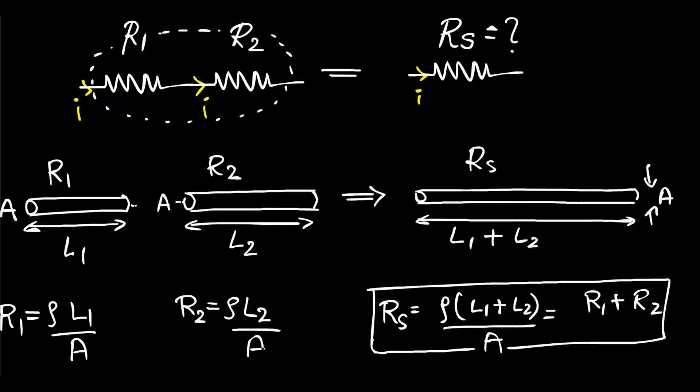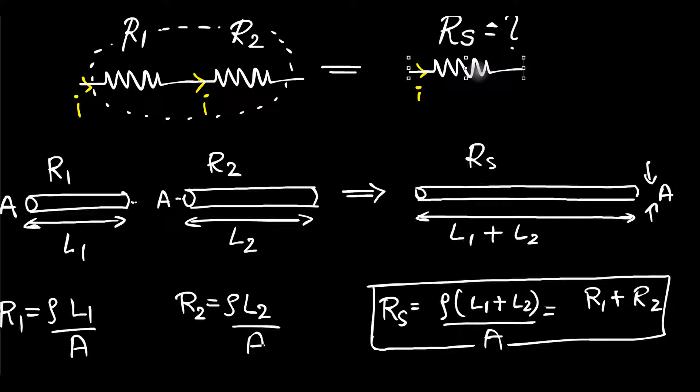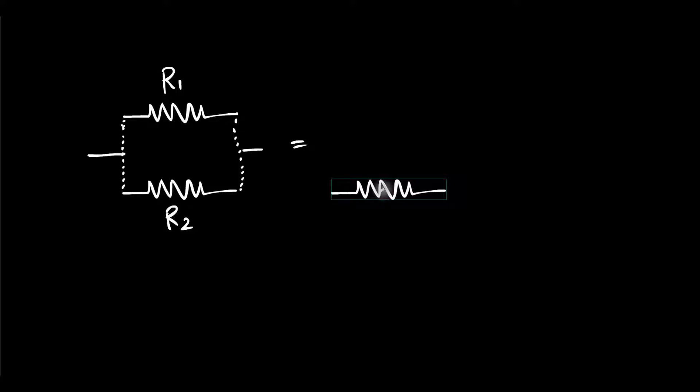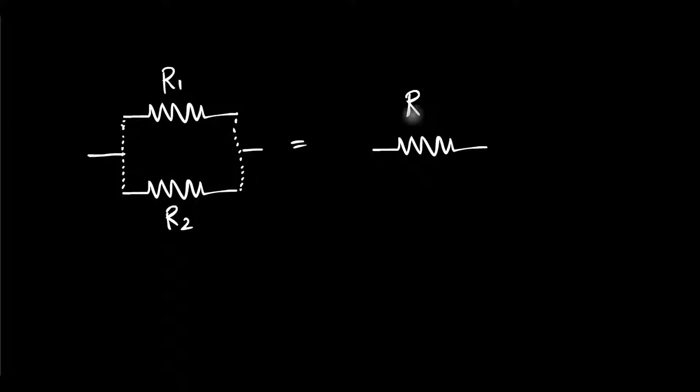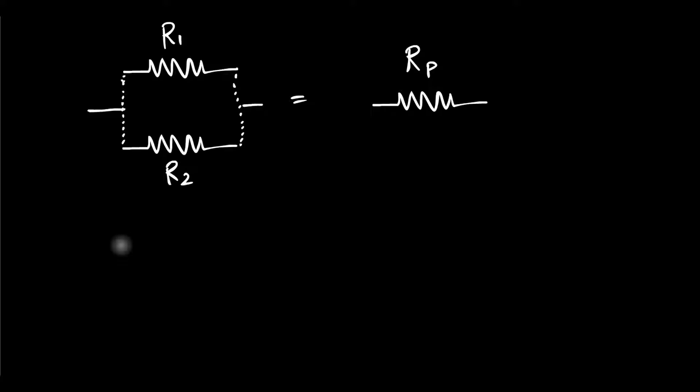Now let's see what happens when we put them in parallel. What if I take these two resistors — R1 and R2 — and connect them in parallel like this? The question now is: what is that one single resistance RP that I should replace these two with? That single resistance must be equivalent to these two resistances in parallel.